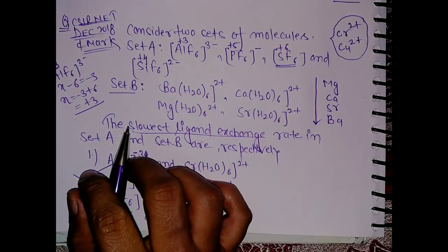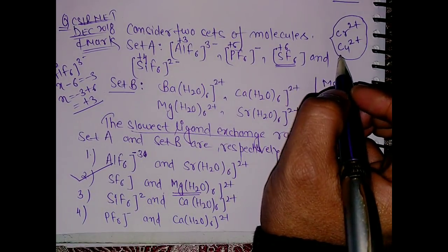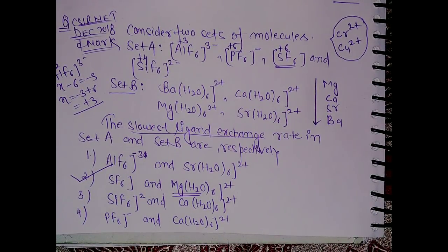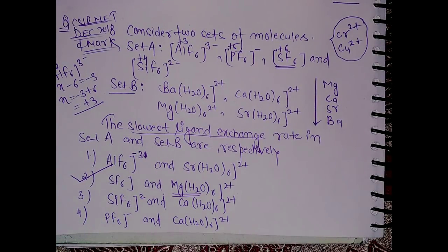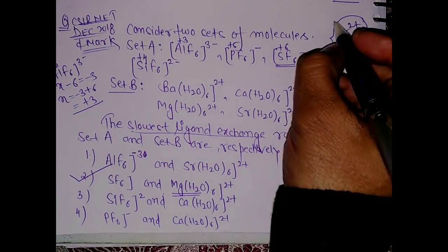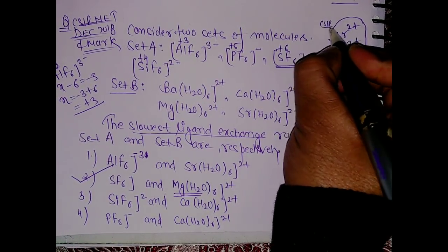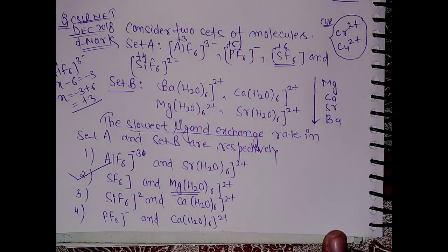Whenever you see these two metal ions, then this ligand exchange rate will be the highest. Why? Because you know there is a Jahn-Teller distortion in both the compounds, so that will be responsible for the higher exchange ligand mechanism. So this is also a CSIR question, it has already come.